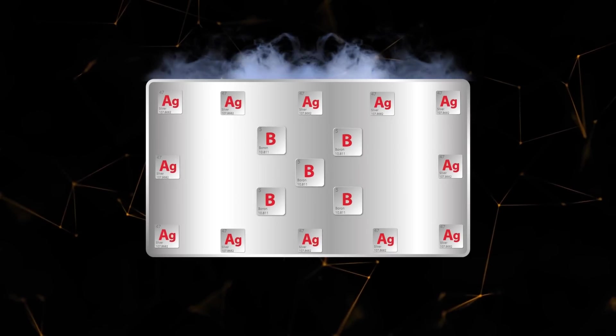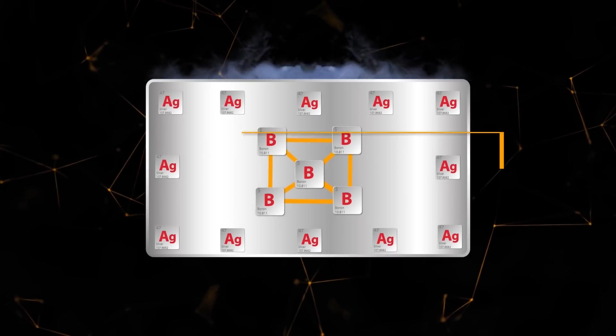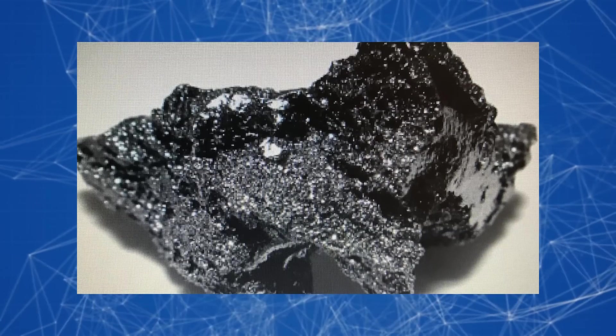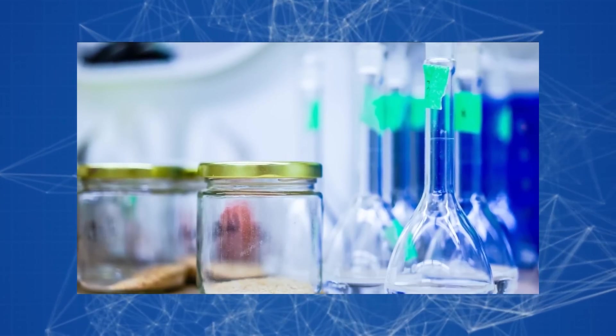Theoretically, each boron atom should bond with six others. But in reality, they usually form four to five bonds each. It is the presence of so-called vacancies that gives borophene crystals their unique qualities.